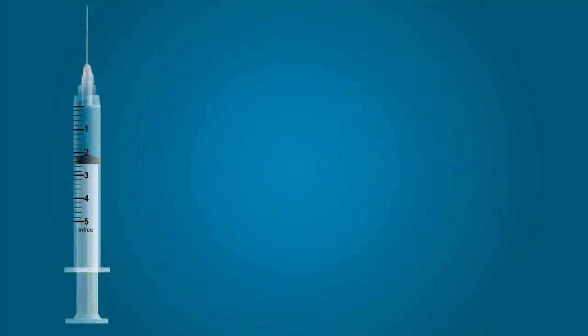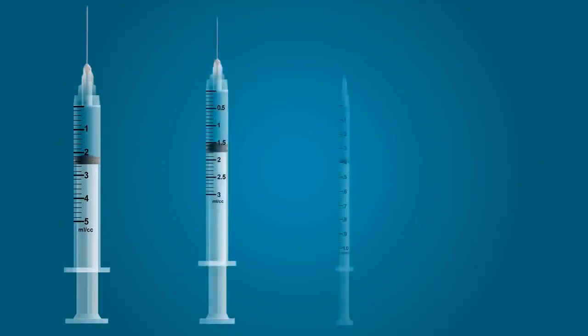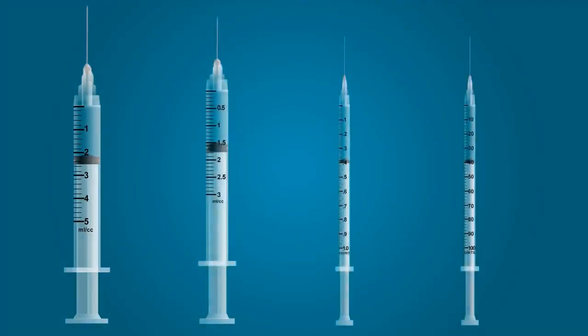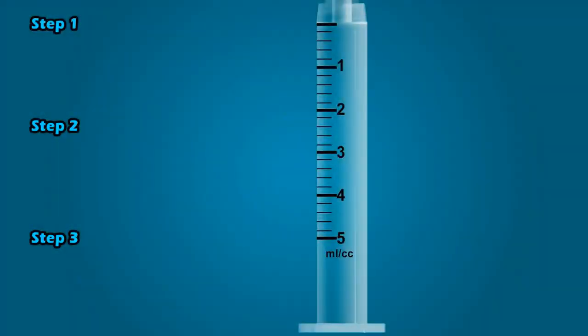We will cover the graduation marks on 5 milliliter, 3 milliliter, 1 milliliter, and U100 syringes. There are many other sizes of syringes, but once you finish this lesson, you will feel confident in reading syringes of any size. Now let's focus on interpreting the values of the graduation marks on these syringes. To interpret the values of graduation marks, we will use a three-step process.